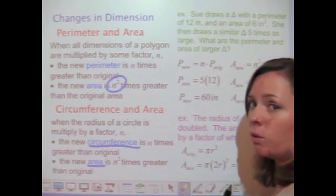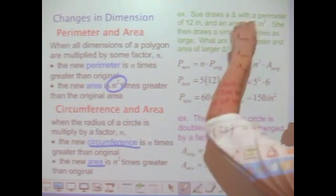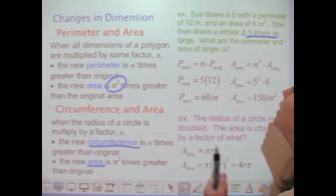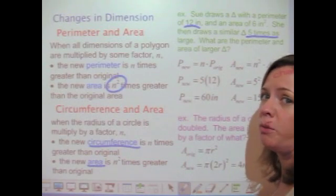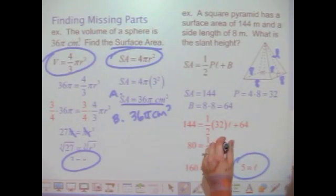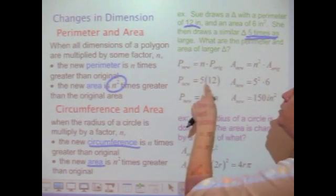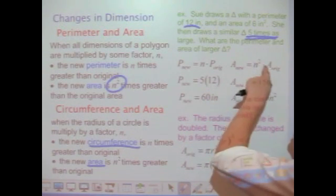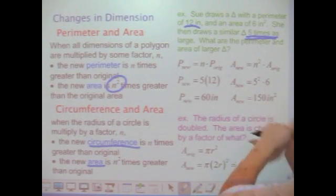Sue draws a triangle with a perimeter of 12 inches and an area of 6 square inches, then draws a similar triangle that is 5 times as large. For the new perimeter, it's n times as large as the original — so 5 × 12 = 60 inches. The area changes by a factor of n²: take the original area of 6, multiply by 5² = 25, and 25 × 6 = 150 square inches.